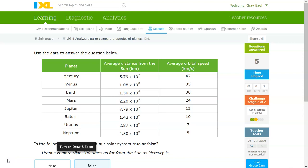Alright, and final question for today. Uranus is more than 100 times as far from the sun as Mercury is. So Mercury is 5.79 times 10 to the 7. Uranus is 2.87 times 10 to the 9. For it to be more than 100 times as far away from Mercury, that's two zeros by the way.